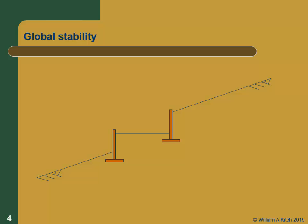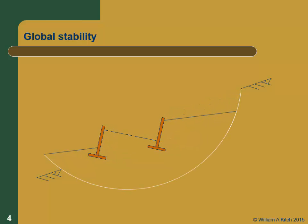Another very important failure mode — and one that sometimes controls — is global stability. You could design two walls individually and check all the loads and they'd be fine, but the real issue could be a global stability problem, which is really a slope stability problem. This is approached as a slope stability design, so it's covered in the slope stability class, not here. It's really important that you understand this failure mode exists and that you need to check designs for it.